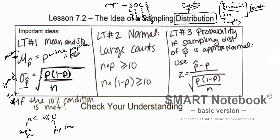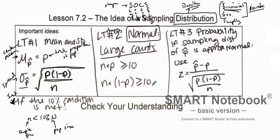For shape, we can plot many different samples and look at what the distribution looks like. We can also determine if the shape is approximately normal. Because it's very similar to binomial, we use what's known as the large counts condition: if n times P is greater than or equal to 10, and n times (1 minus P) is greater than or equal to 10, then the shape of our sampling distribution will be approximately normal.